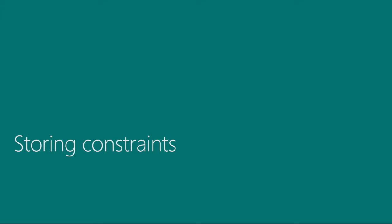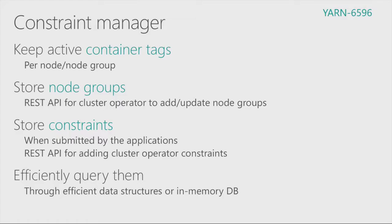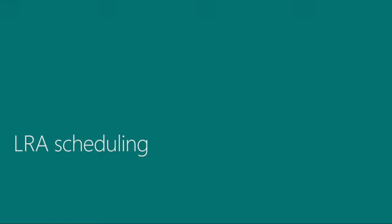How do we store the constraints? We introduce a constraint manager with several roles. First, we keep active container tags per node or node group. We also store node groups, with a REST API for the cluster operator to add, remove, and update them. Most importantly, we store constraints — when an application gets submitted, its constraints are stored in the constraint manager, and there is also a REST API for cluster operator constraints. We are looking into efficient data structures or an in-memory database for querying them.